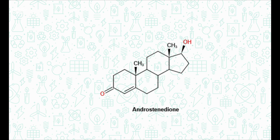Testosterone and androsterone are synthesized in the testes from cholesterol. Another minor androgen hormone is androstenedione. Androstenedione is an endogenous weak androgen steroid hormone, produced in the adrenal glands and the gonads.